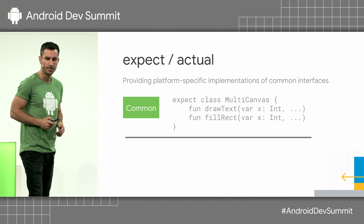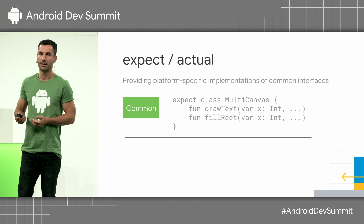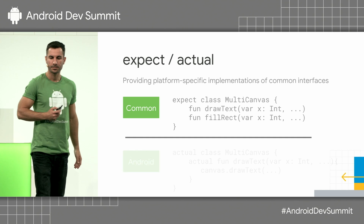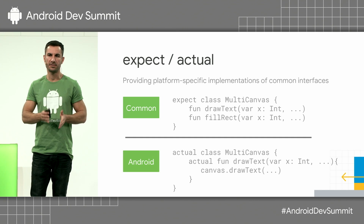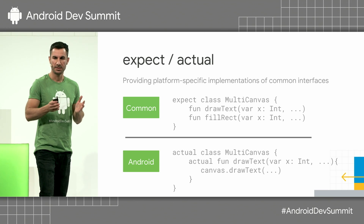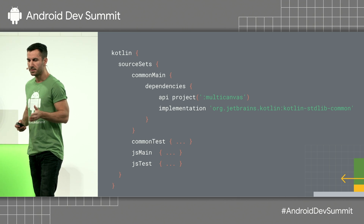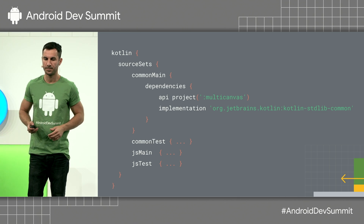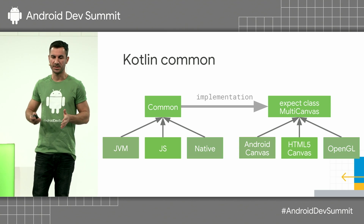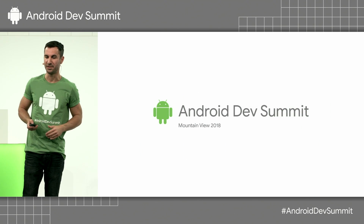So how does it work in Kotlin? There's an expect and actual mechanism that lets you declare expected classes in your common code — which is almost like defining an interface in Java. Then in each of my platform-specific source sets, I provide the actual implementation that can depend on and use platform APIs, such as the Android canvas. When I add that dependency from my common source set to the other one, it looks something like this. But actually, when compiling for a specific platform such as JS, this dependency will use the correct HTML5 canvas.